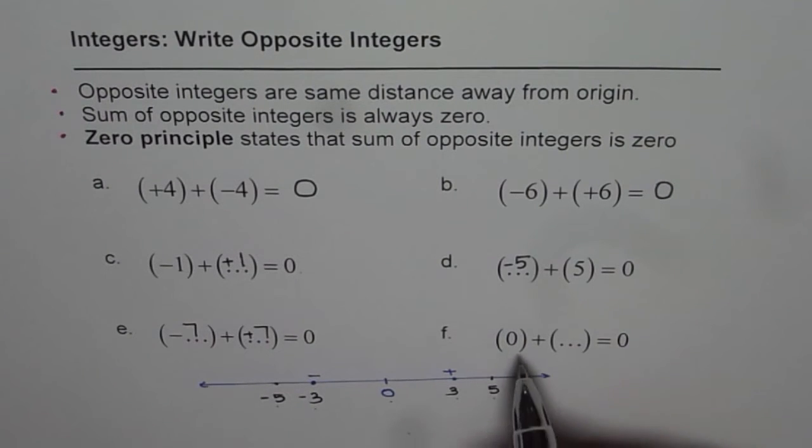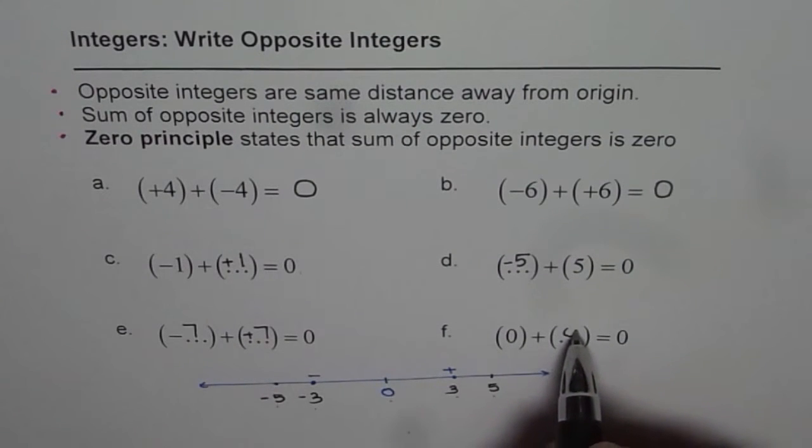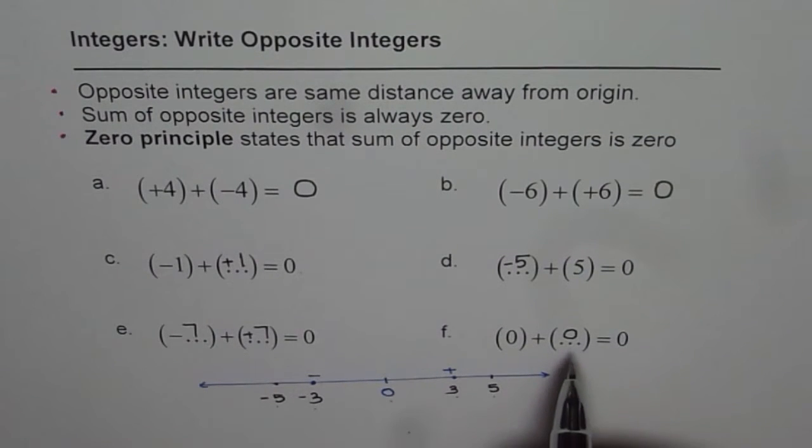Now 0 plus what is 0? The only number which 0 adds to, to make it 0, is 0 itself. Remember 0 does not have any sign. So when we say 0, we do not add or subtract or put plus or minus sign with it. 0, consider this to be without a sign.